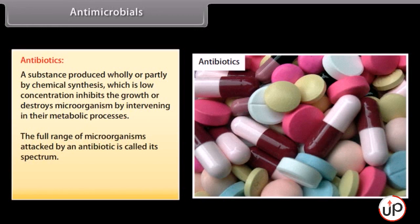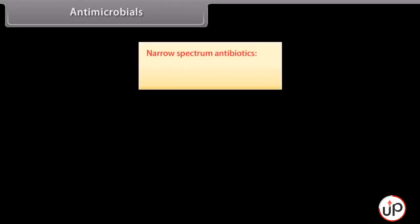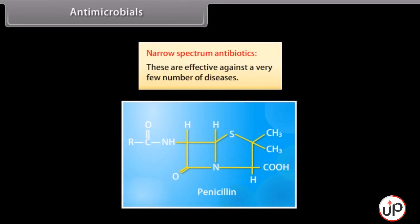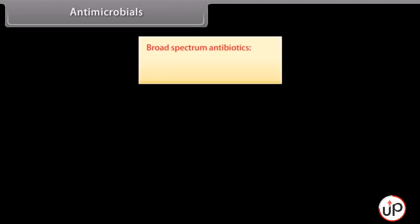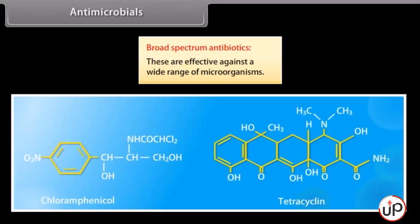The full range of microorganisms attacked by an antibiotic is called its spectrum. Antibiotics can be divided into two types: narrow spectrum antibiotics, which are effective against a very few number of diseases (for example, penicillin); and broad spectrum antibiotics, which are effective against a wide range of microorganisms (for example, chloramphenicol and tetracycline).